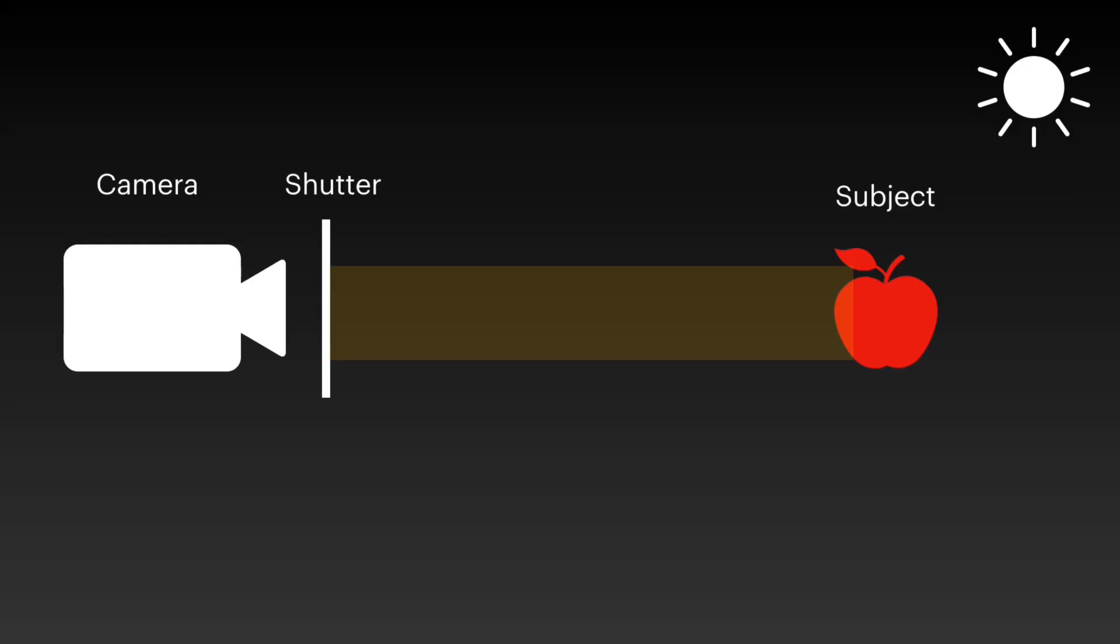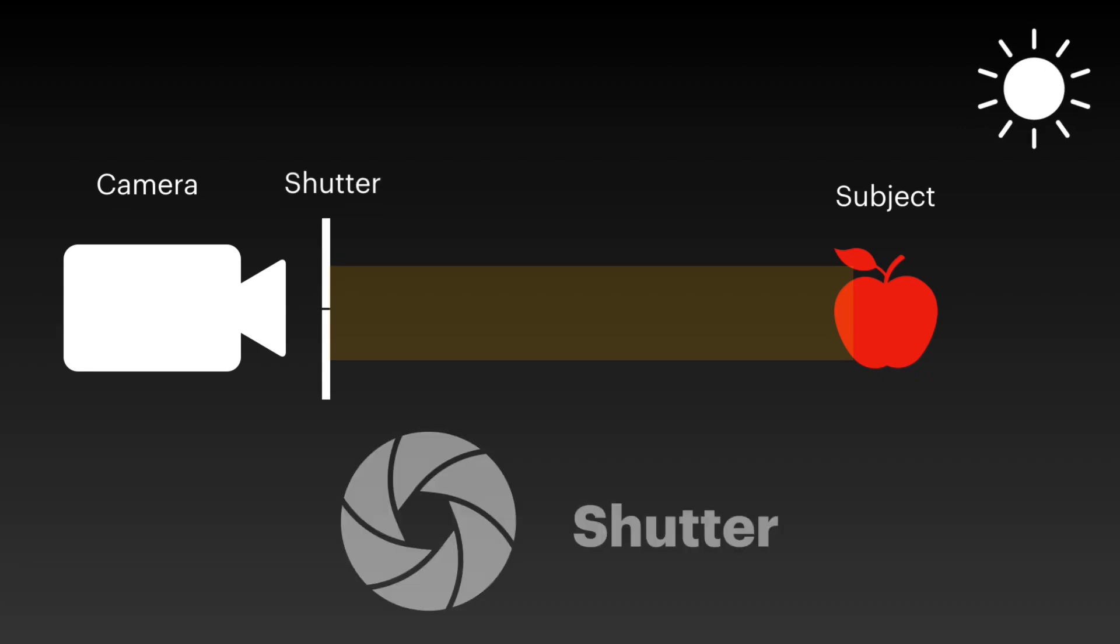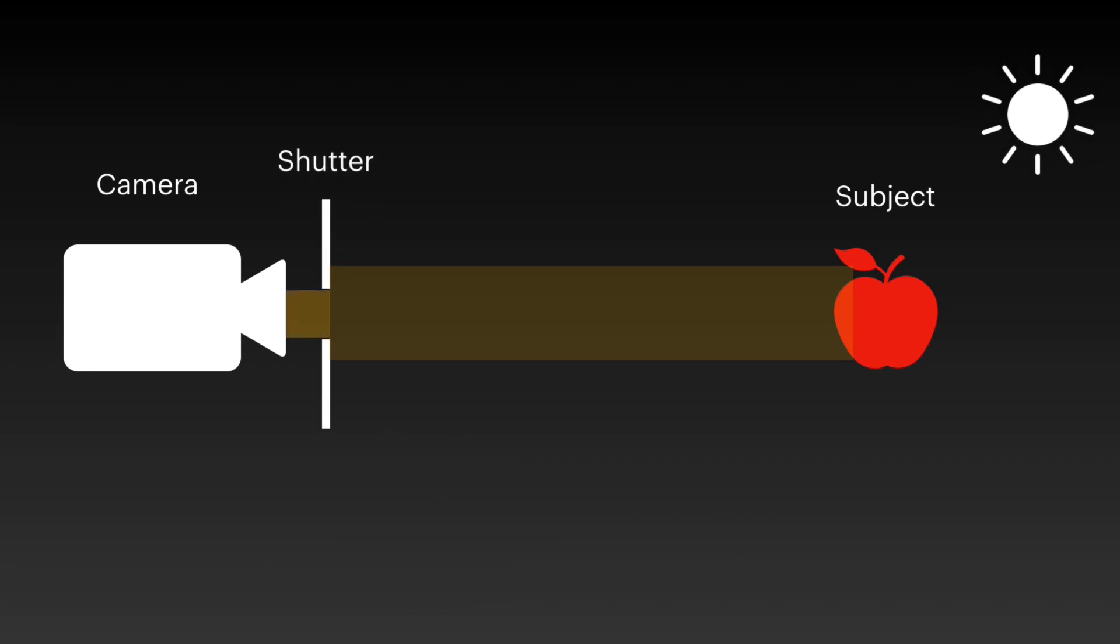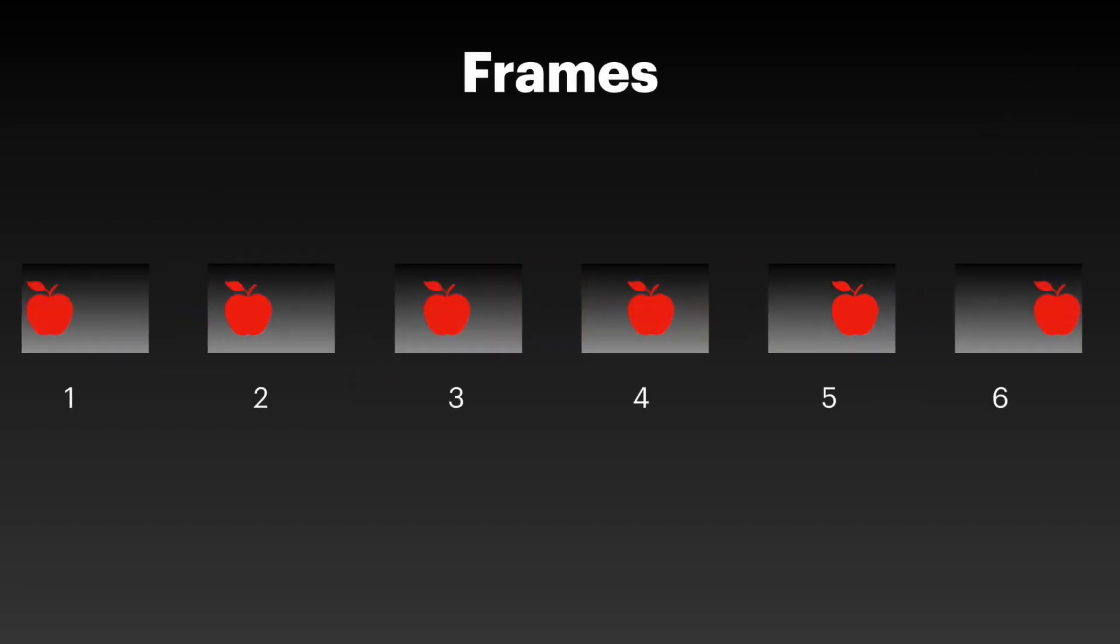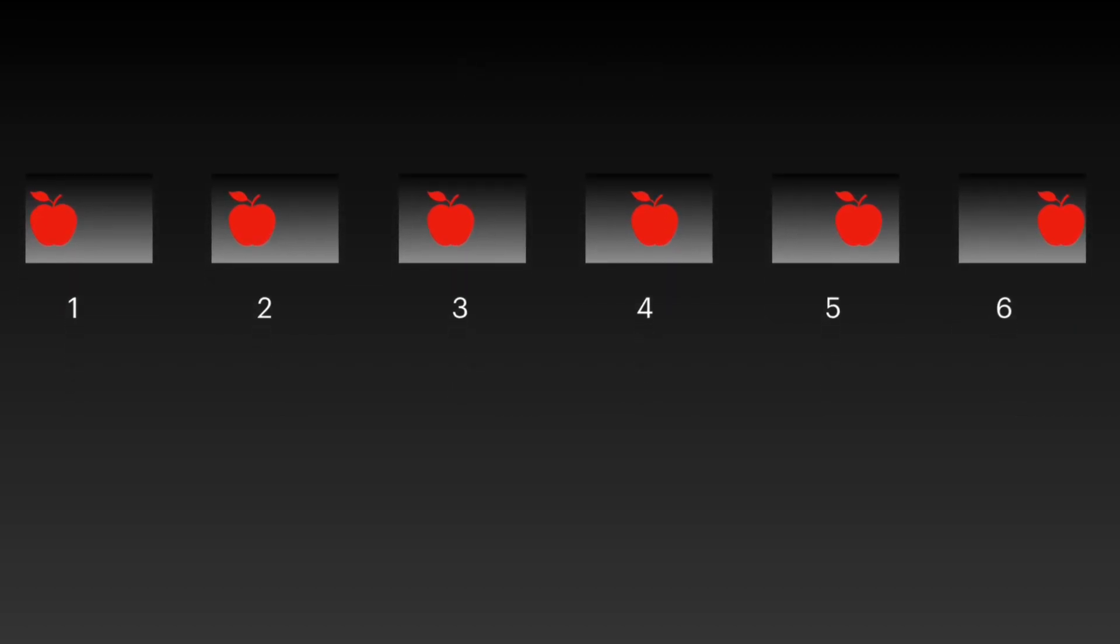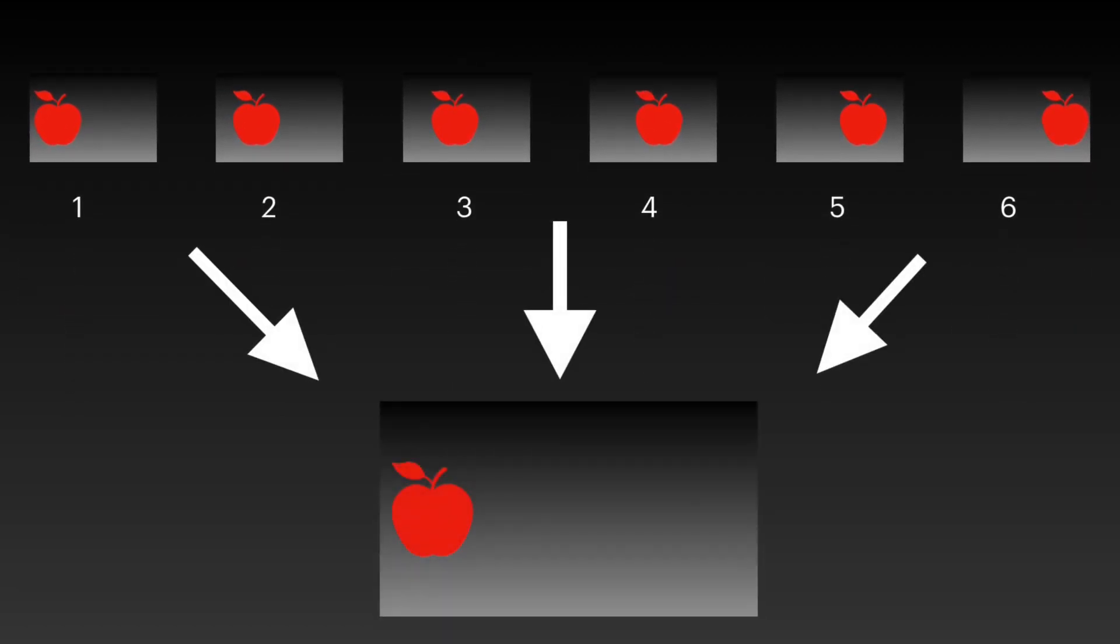For this, we must first understand how a typical camera works. A typical camera works using a shutter which lets in light for a short period of time, which is processed and creates an image. For video, these images are just combined together at a high frequency, which when shown quickly in succession, appear like a moving image.